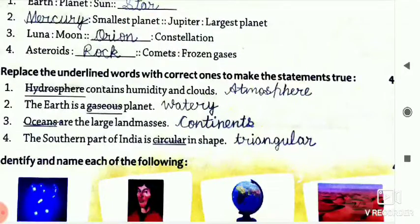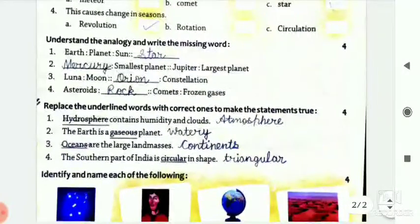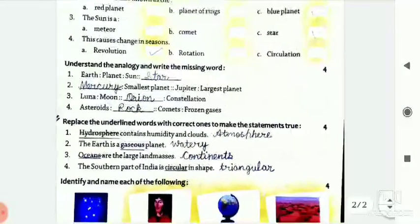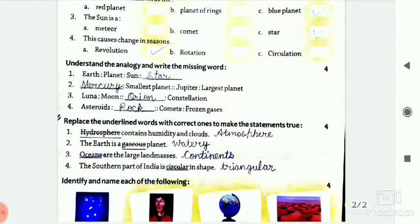Now, identify and name each of the following. First one, try to guess. First one is your constellation, means group of stars. Second picture is your volcano. Third one is your globe. And fourth one is your desert.